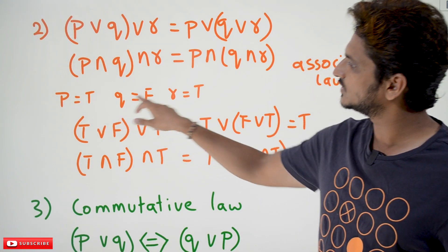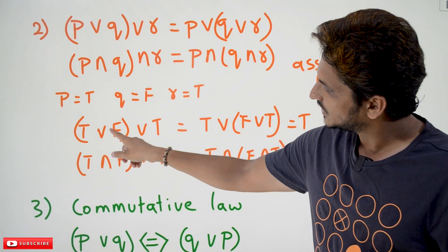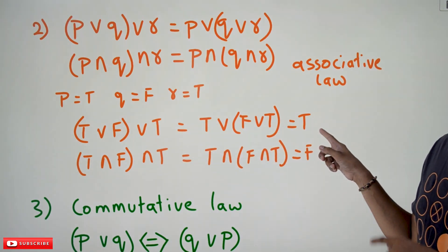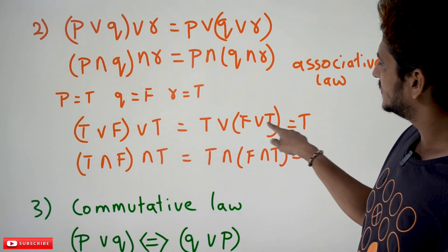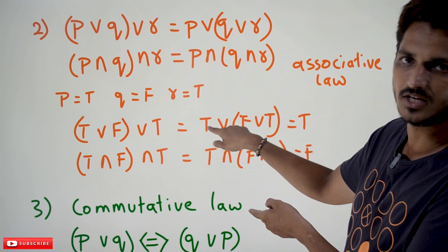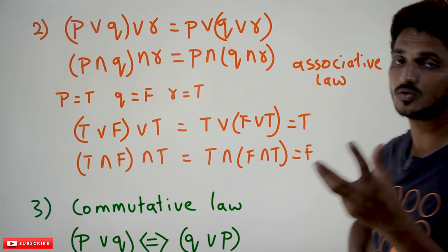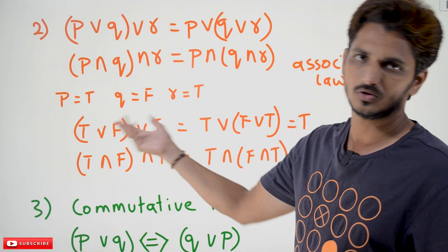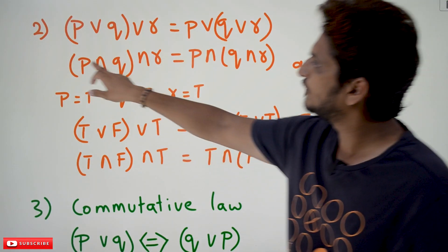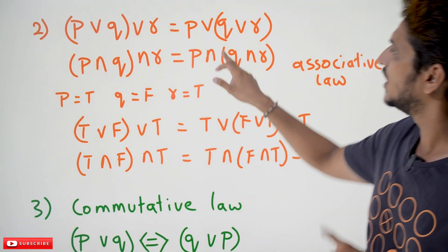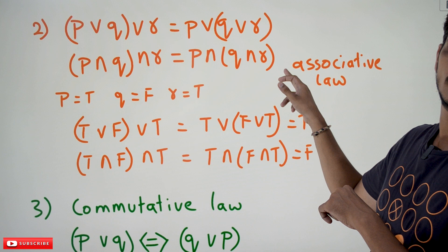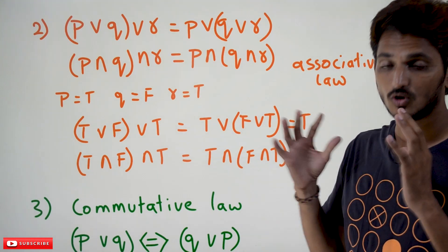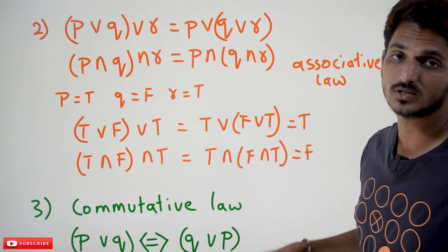Let us take an example: P equals true, Q equals false, R equals true. True disjunction false gives true, disjunction true gives true as the final output. Similarly, false disjunction true, disjunction true also gives true. The point is: disjunction means OR — any one is true, the entire equation is going to be true. Similarly, P conjunction Q conjunction R equals P conjunction Q conjunction R — you place the brackets anywhere and you get the same output.